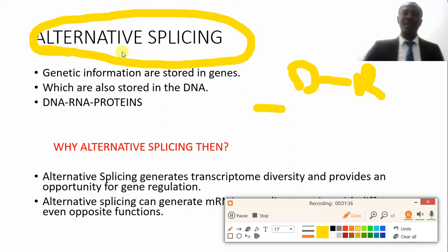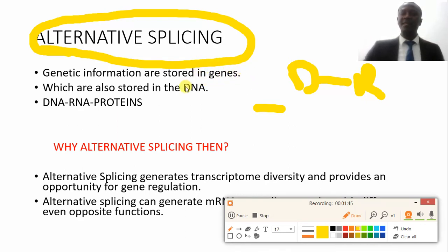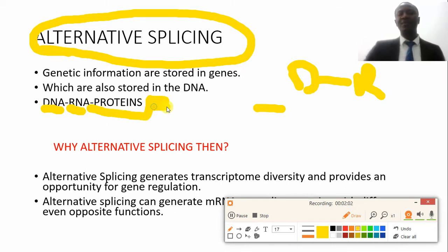In genetic information, as we know, genes are all stored in our DNA, and the genes carry the vital information that we need. This DNA is where all the genes are housed. DNA will later be transcribed into RNA, and RNA will later be translated into proteins so that we can see the phenotypes of these proteins.